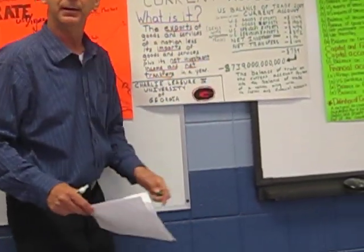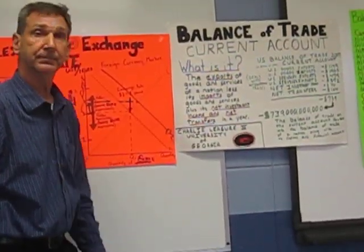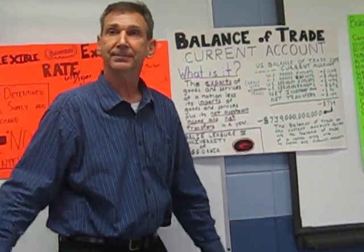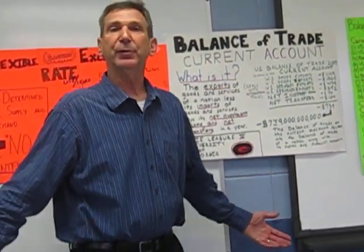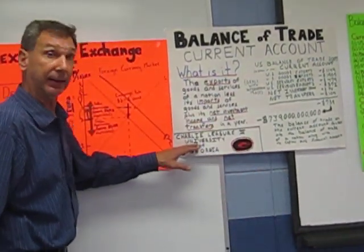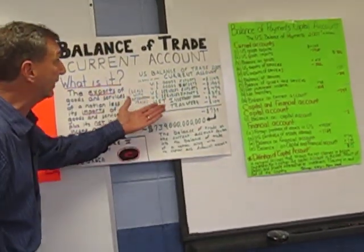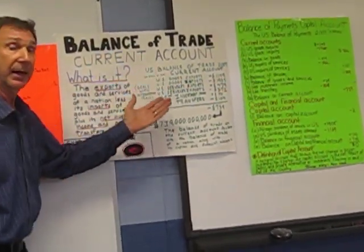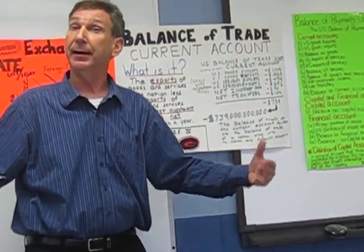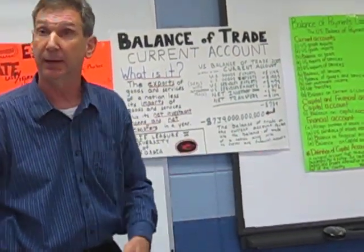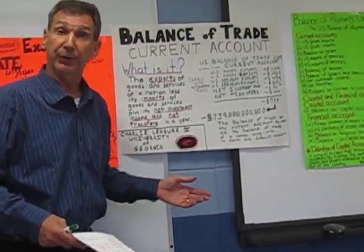Finally, the last question talks about: assume that the United States current account balance is zero. Based on the change in the value of the Euro identified in Part D, will the United States current account balance now be in surplus, deficit, or remain at zero? Well, we want to talk about what the current account is. We want to thank Charlie Leiser of the University of Georgia and Tanner Kiley of Penn State University for giving us the current account. The current account means flow of goods and services between two countries. The capital account means the flow of currencies between two countries.